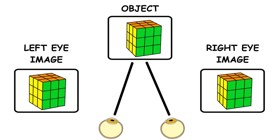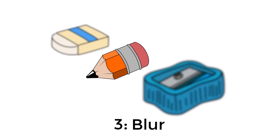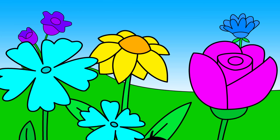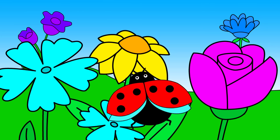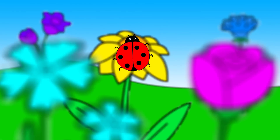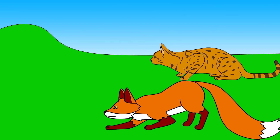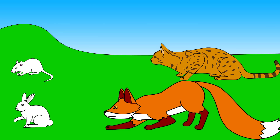Two: binocular stereopsis. This occurs when two eyes send the brain slightly different images, which are then combined to create a three-dimensional view. Cats use this method combined with the next one. Three: blur. When you focus on something, especially something close to you, objects nearer and farther from that thing appear blurry. For small predators, this effect is more significant because they are closer to their prey, resulting in a clearer difference in blurriness.